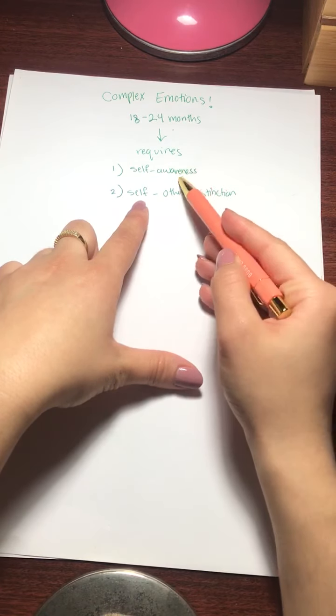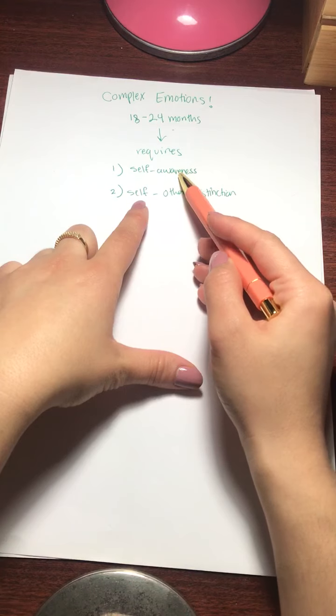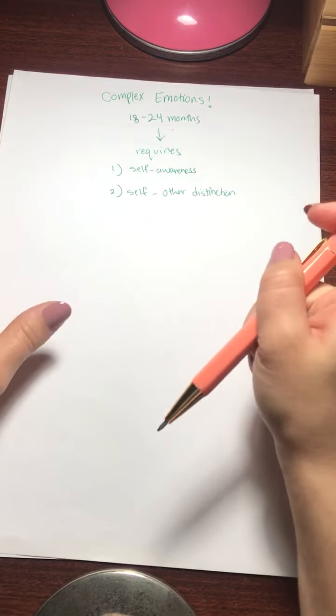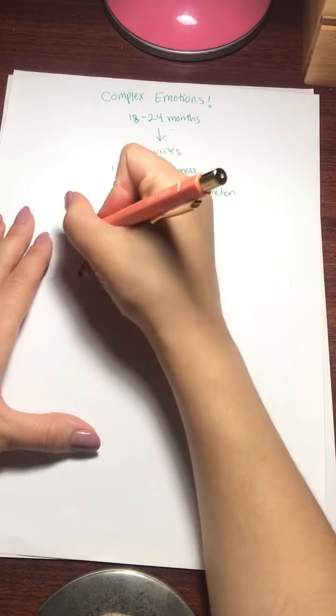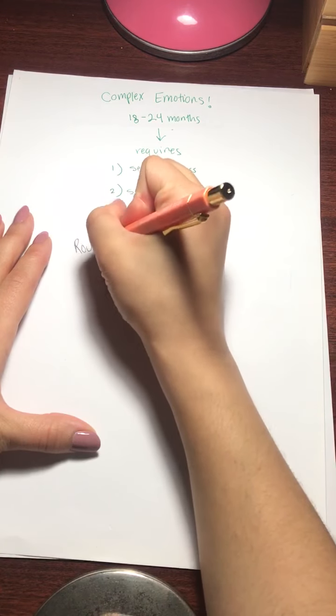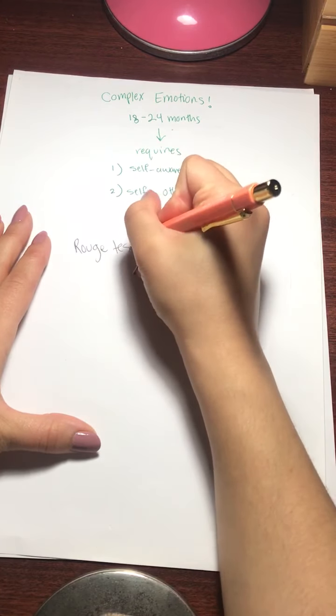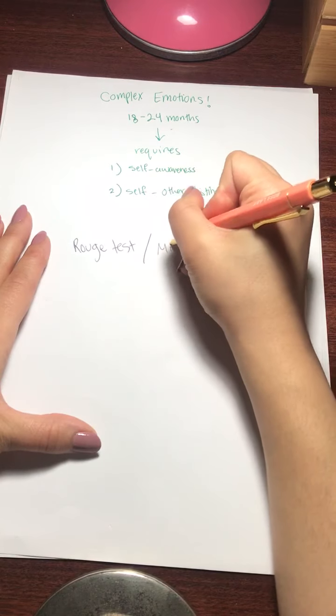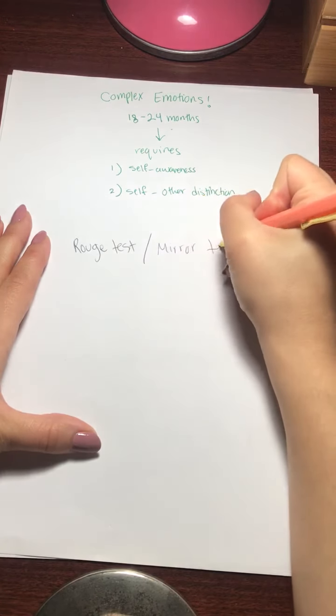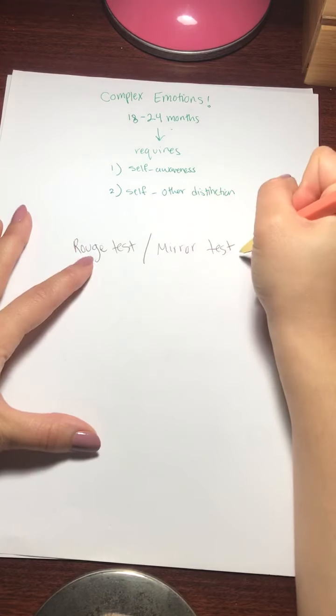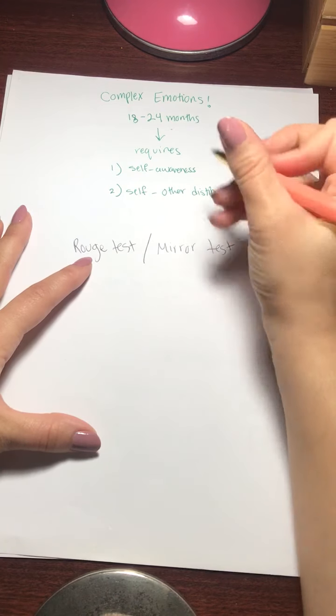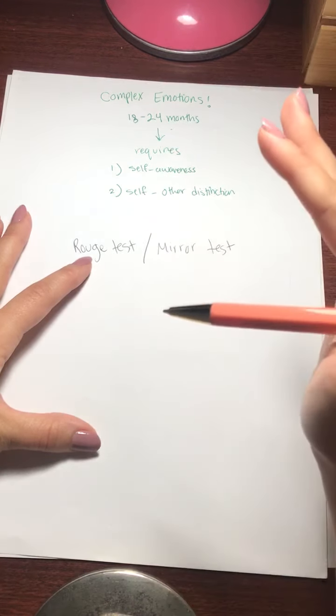There's a way you can test self-awareness in your baby. And if you're in this video, I assume you might, it might be something you might want to check out. Check out the rouge test, also known as the mirror test. This is where it measures baby's self-awareness. This is where you put a red dot on your baby's forehead and have them look in the mirror.